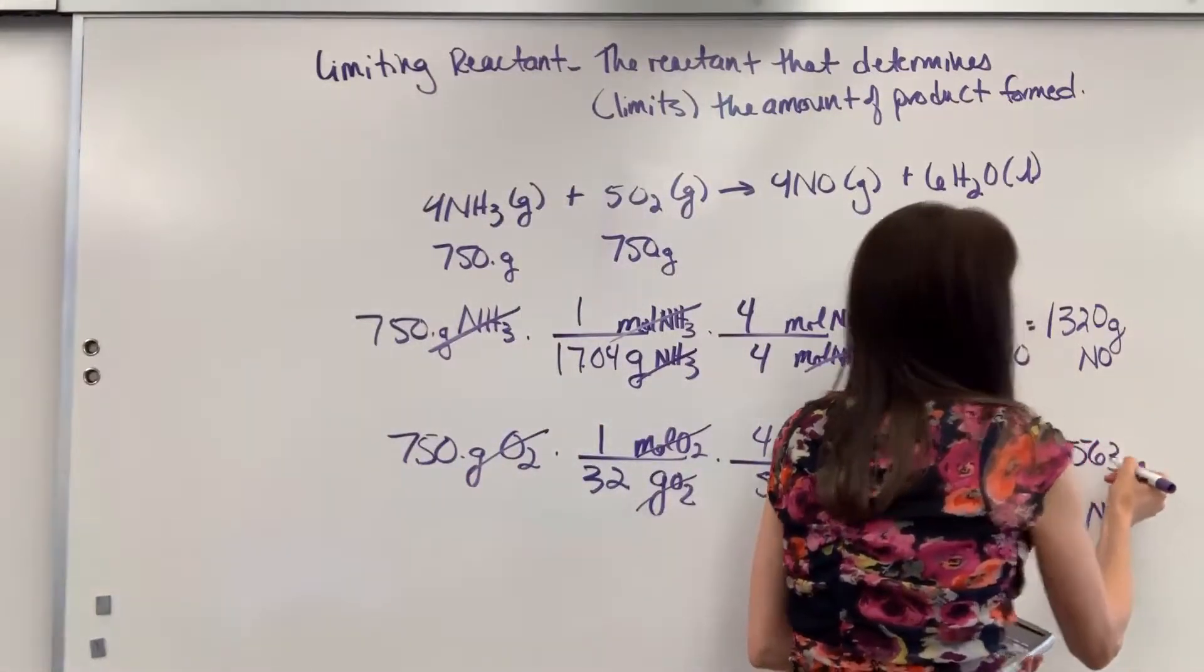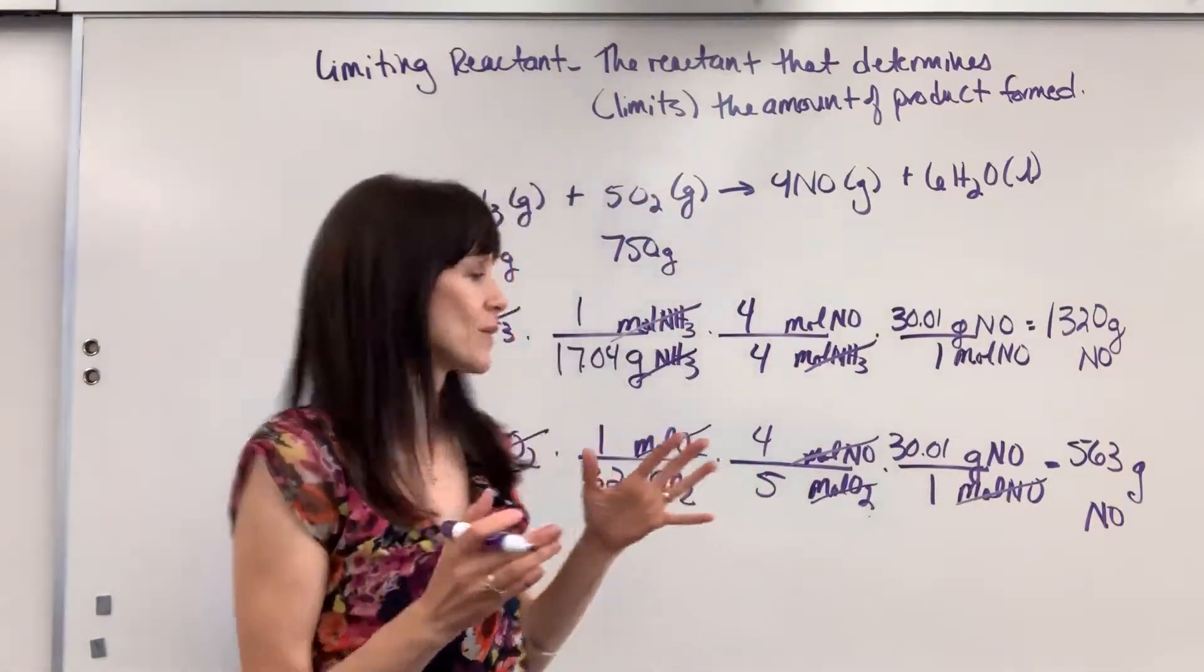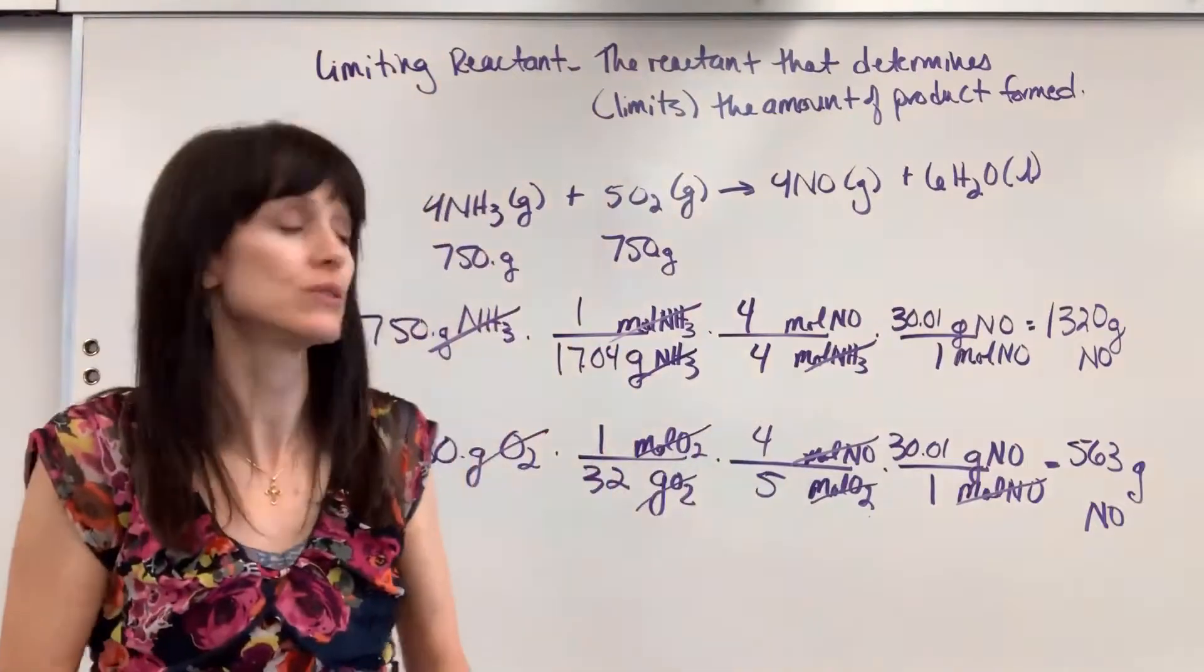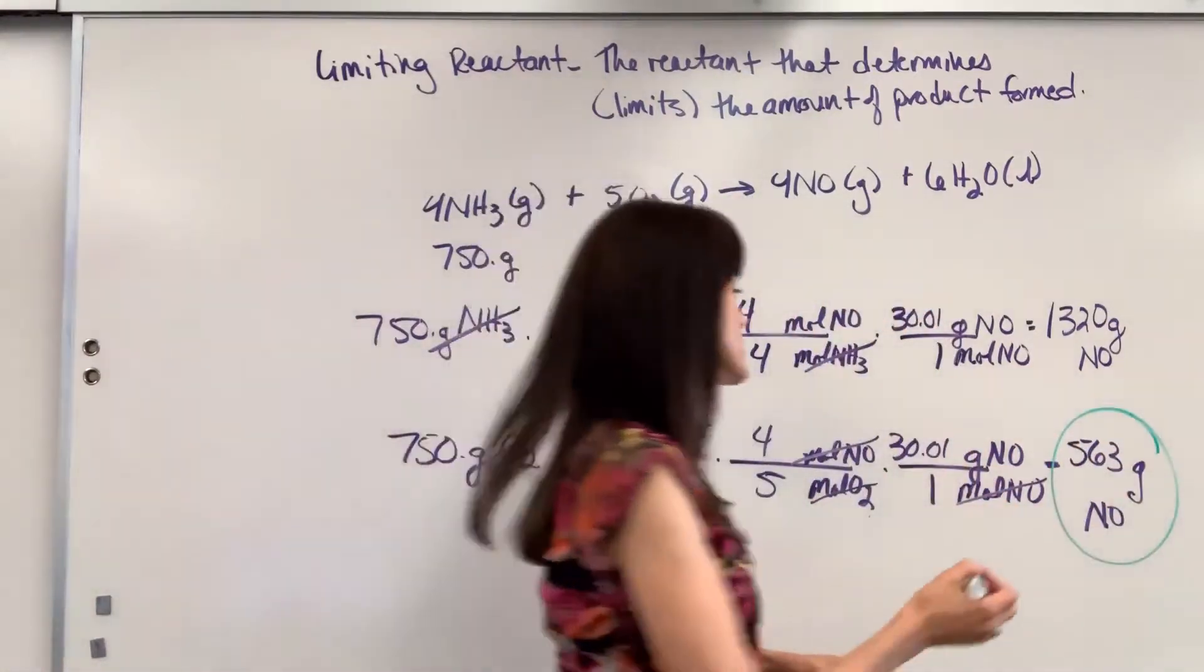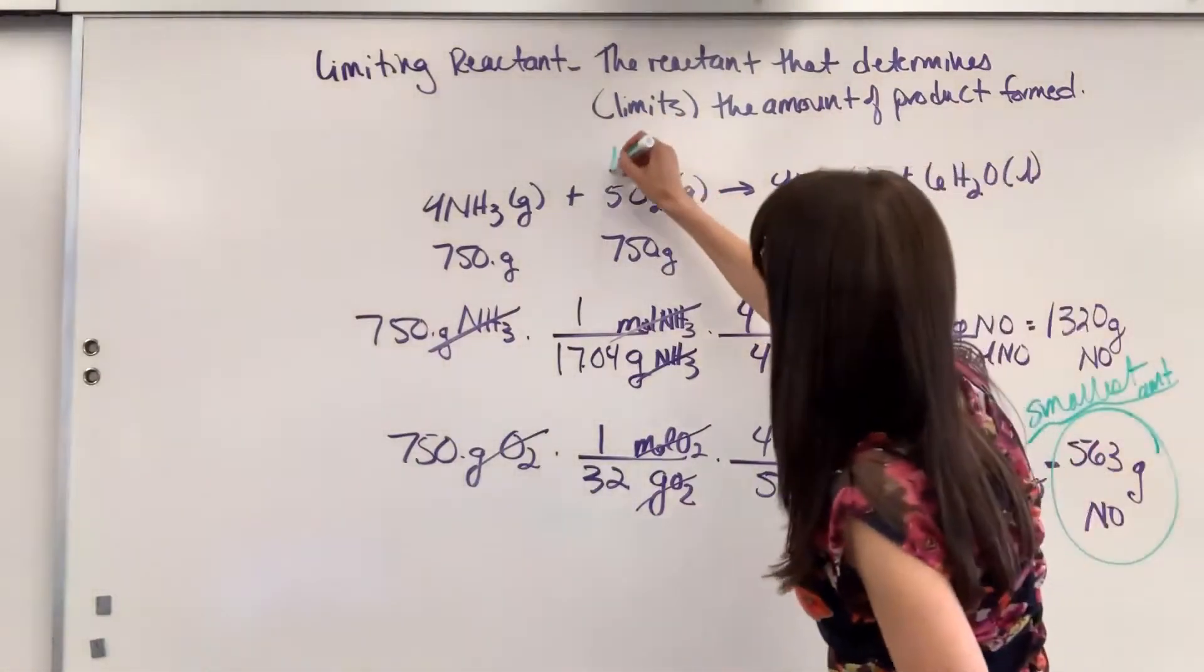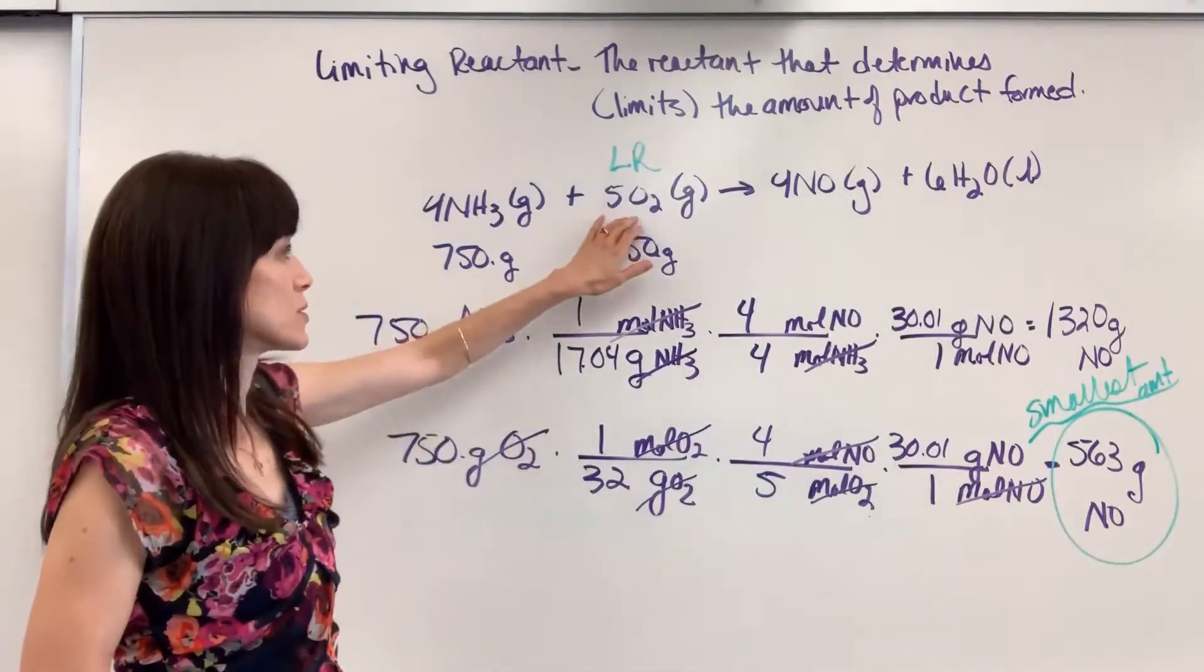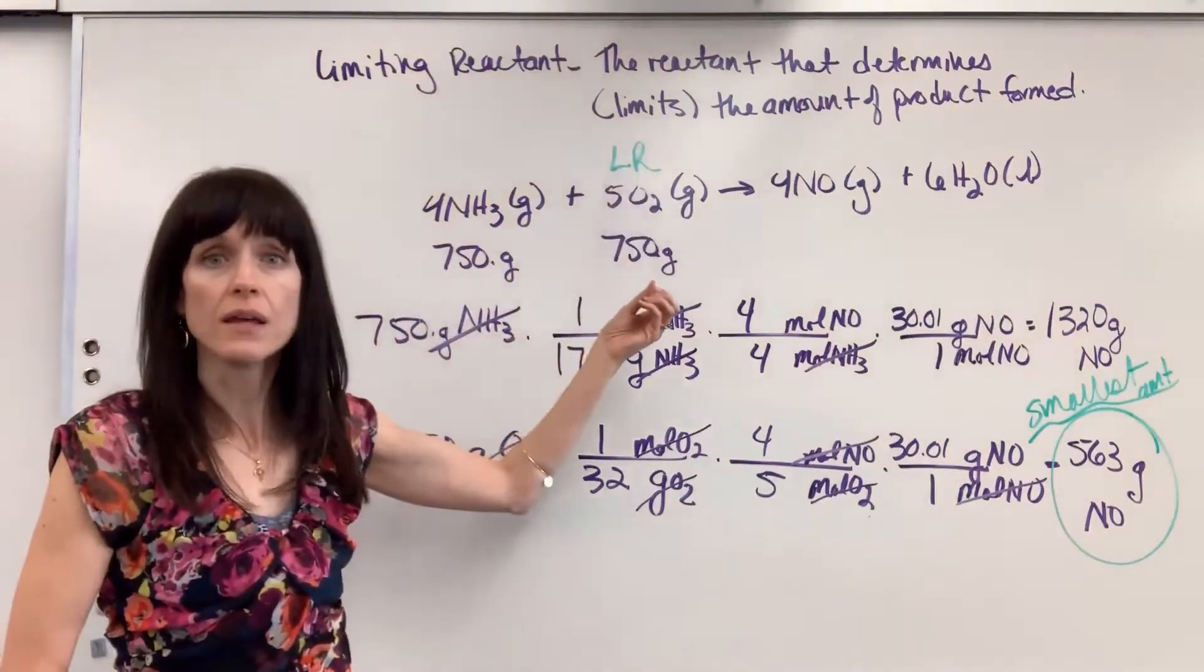563 grams. So we came up with two numbers for nitrogen monoxide. At this point, you're thinking, okay, which one's the answer? It will always be the smallest amount. You can't make any more than the smallest amount. Just like I could only make one and a half omelets. I don't have enough eggs to make two. Well, we don't have enough oxygen to make more than 563 grams. So your takeaway on this is you always choose the smallest amount. And that smallest amount will come from the limiting reactant. So I literally will write LR above the reactant that limits how much will be formed